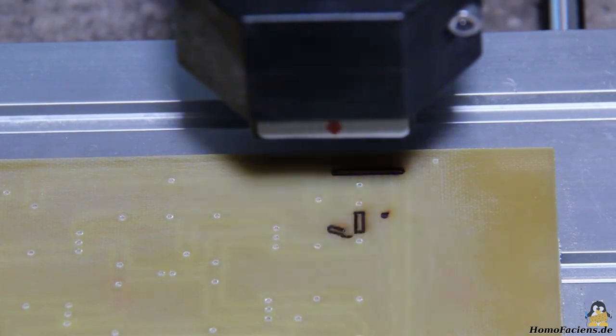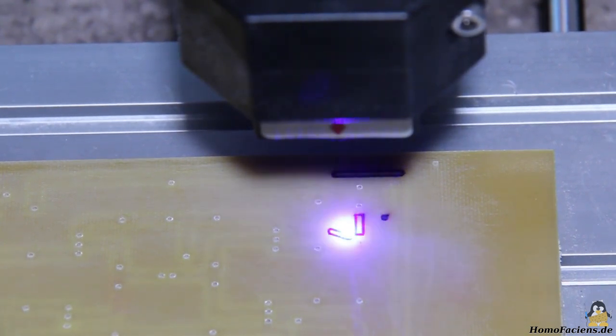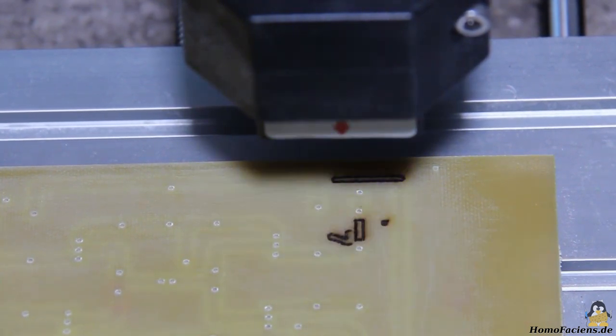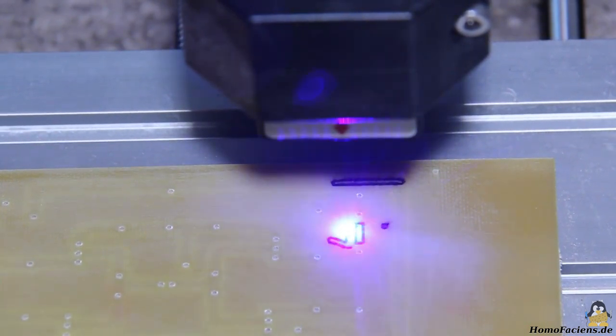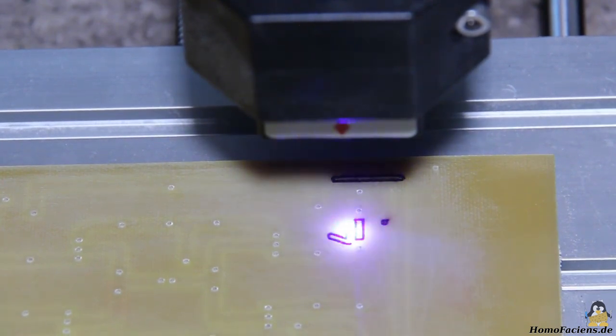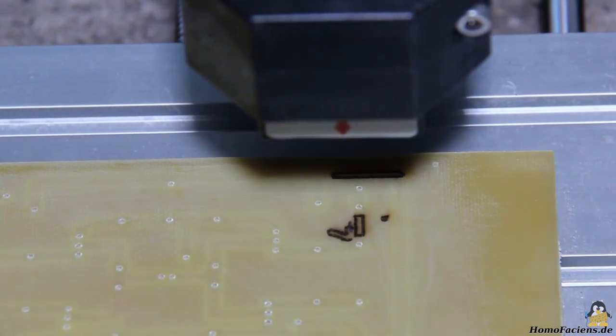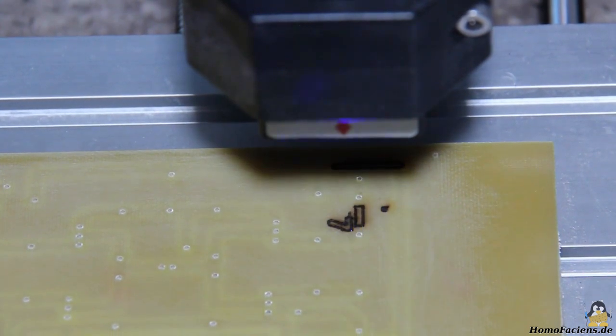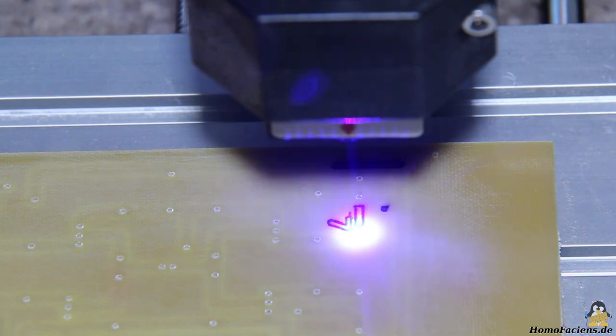Lasering the surface did not work the first time either. The problem is that the board material first melts and evaporates, but then carbonizes and so turns black. From this point on the material absorbs a lot more of the laser light which suddenly burns a lot more plastic, resulting in an irregular engraving.